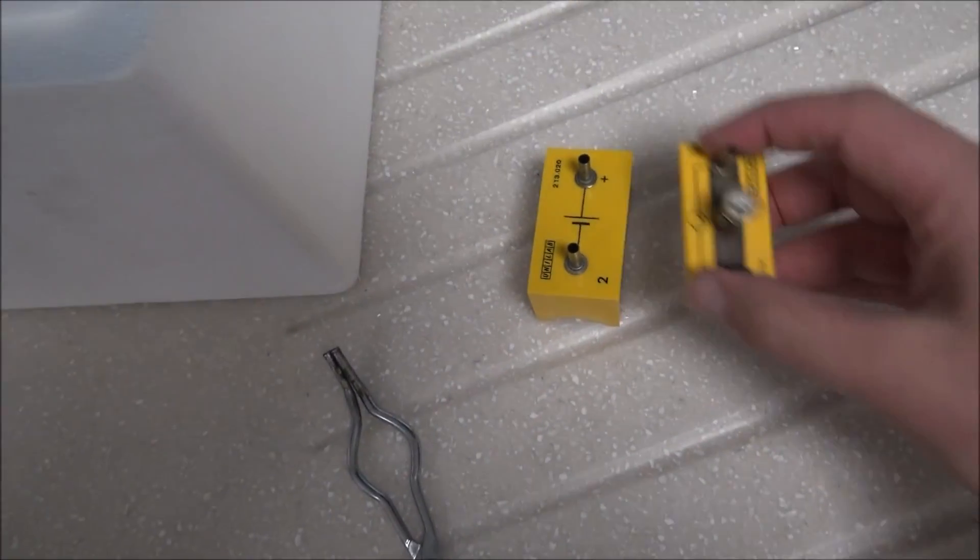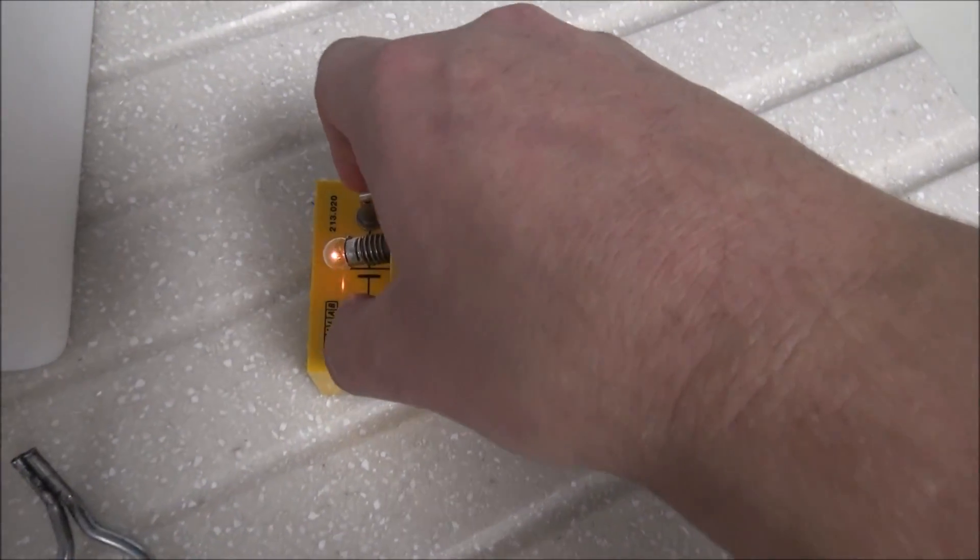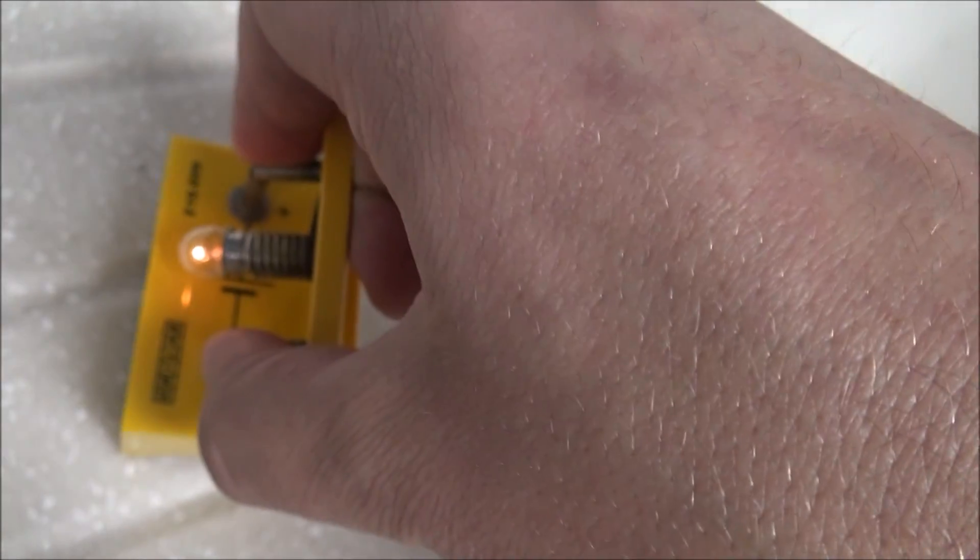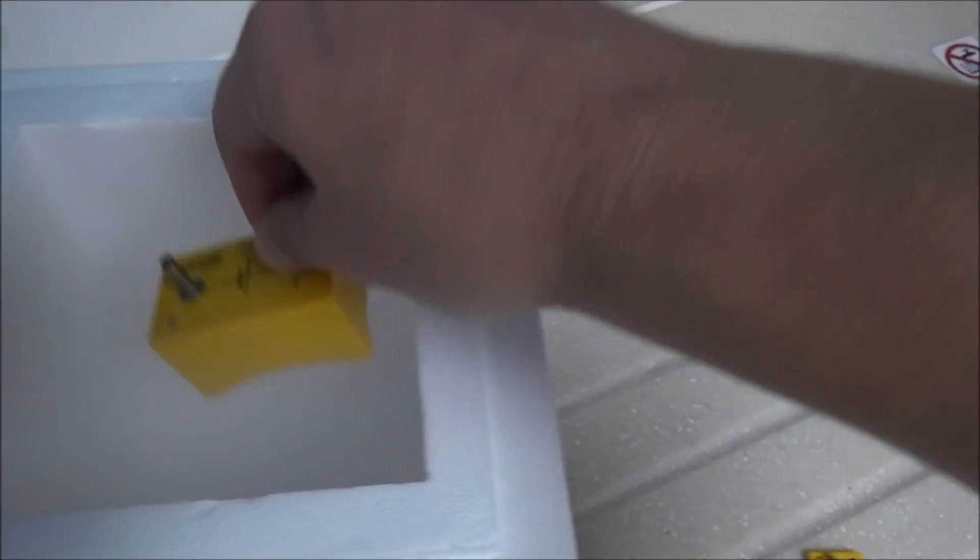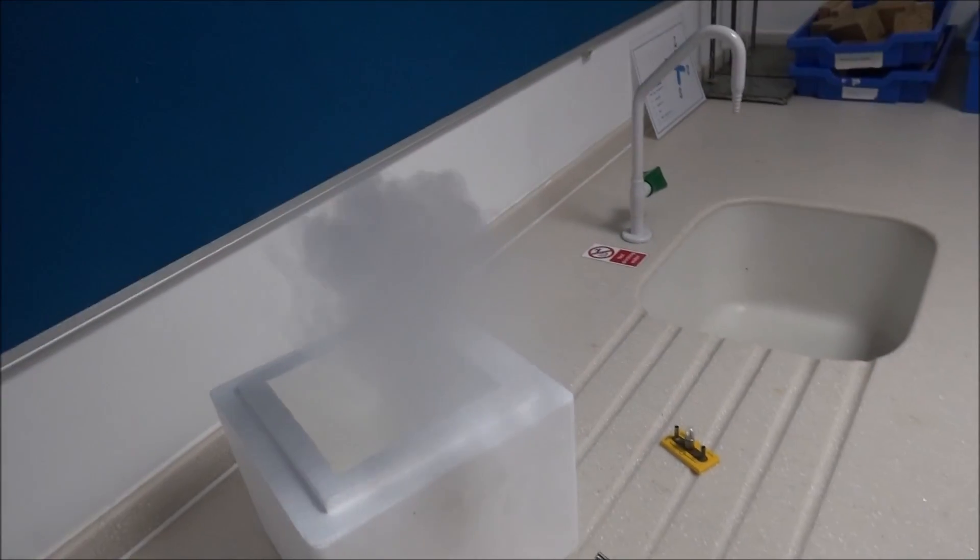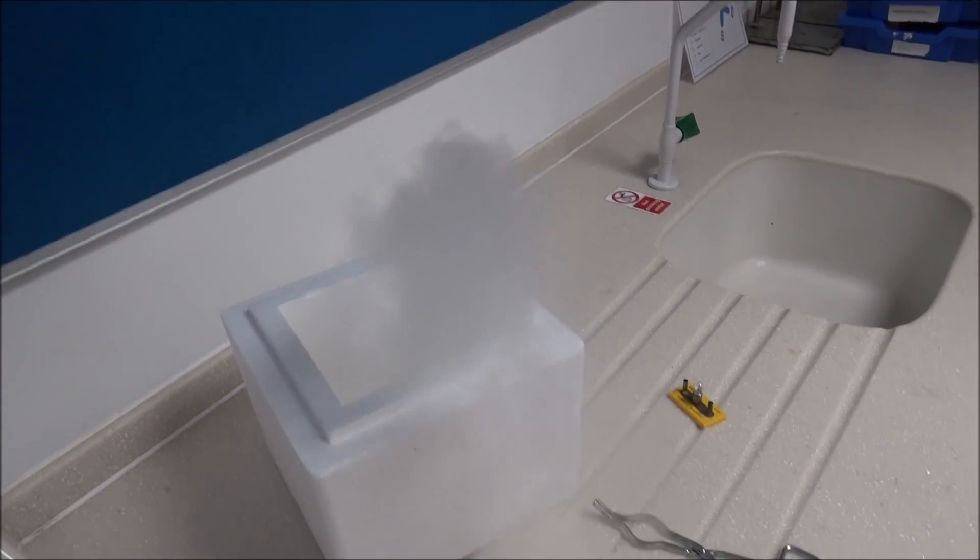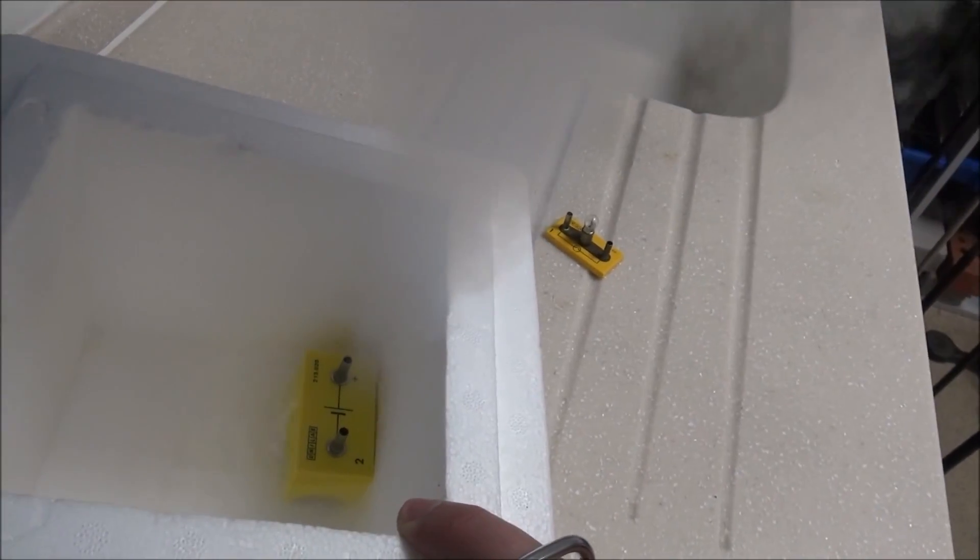Now the other thing we can do is the opposite. Here I have again a battery and a lamp, and this one is fairly bright when it lights up. But this time I'm going to put the cell into liquid nitrogen. That is pretty impressive the way it's doing this. This one takes a lot longer to cool down just because of the larger mass.